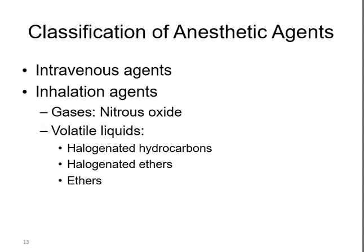Anesthetic agents can be introduced intravenously through an IV line, or they can be inhaled — these are inhalation agents. When inhaled, these agents very quickly go through the lungs and enter the systemic circulation to reach the brain. There are gases such as nitrous oxide, and there are also volatile liquids including halogenated hydrocarbons, halogenated ethers, and ethers.